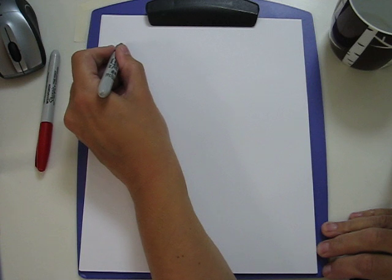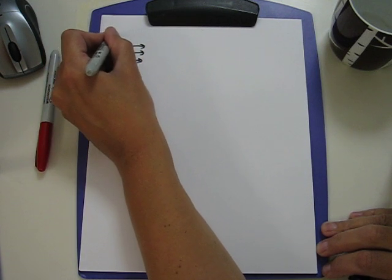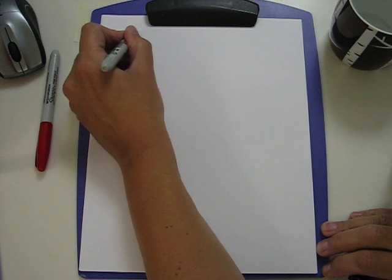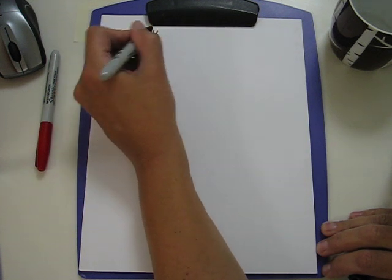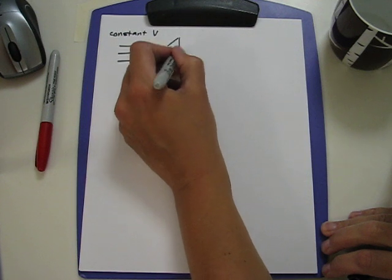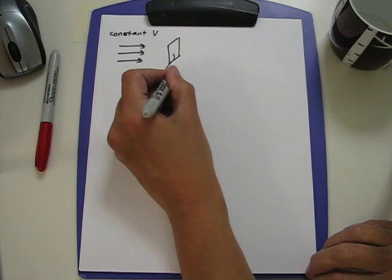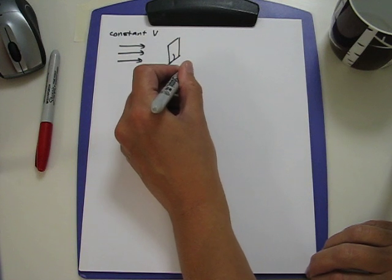To sort out how velocity and flow rate are related, we can consider first a simple problem of a flow where the velocity is uniform, meaning it's the same everywhere. We have a constant velocity, and we imagine that flow going through a cross-sectional area of a simple shape, let's say a square of area 2 centimeters squared.